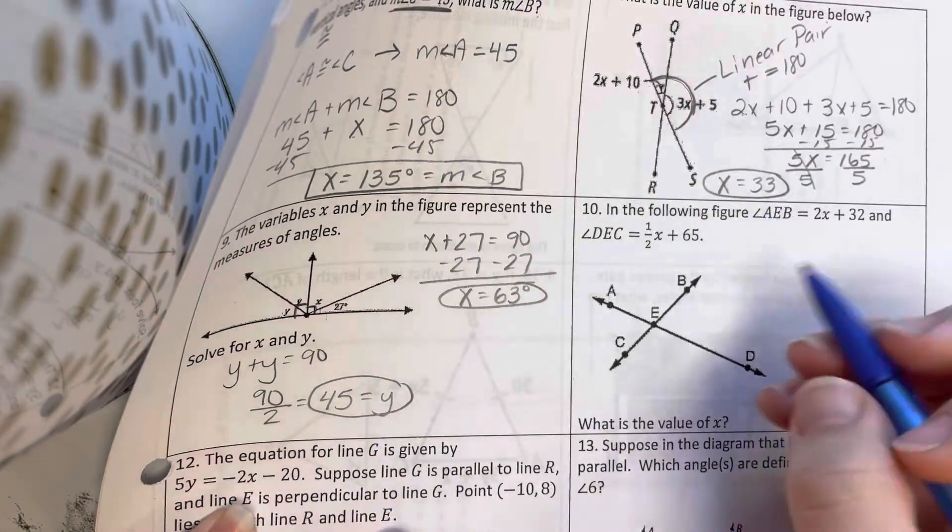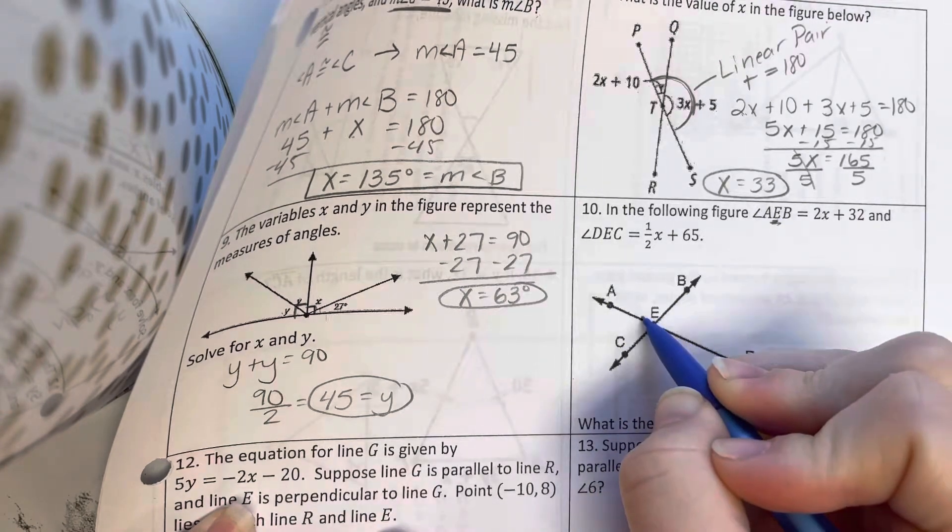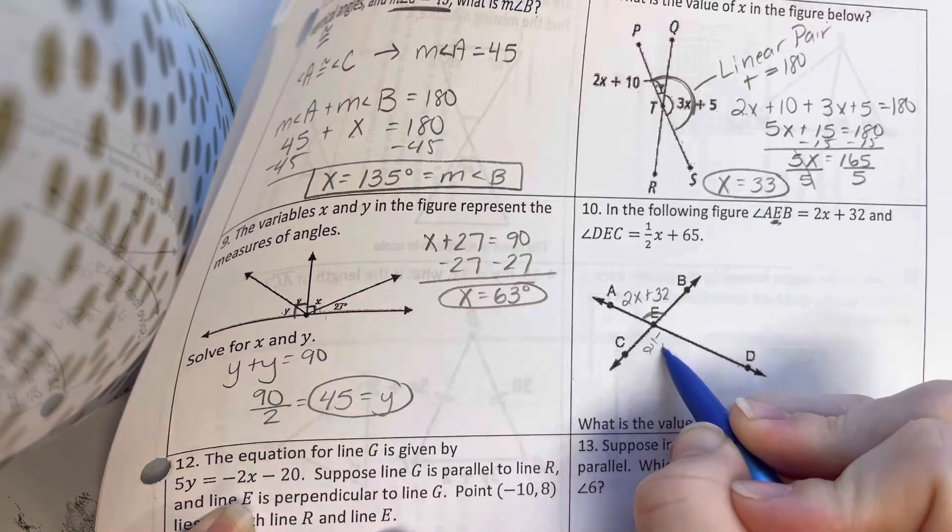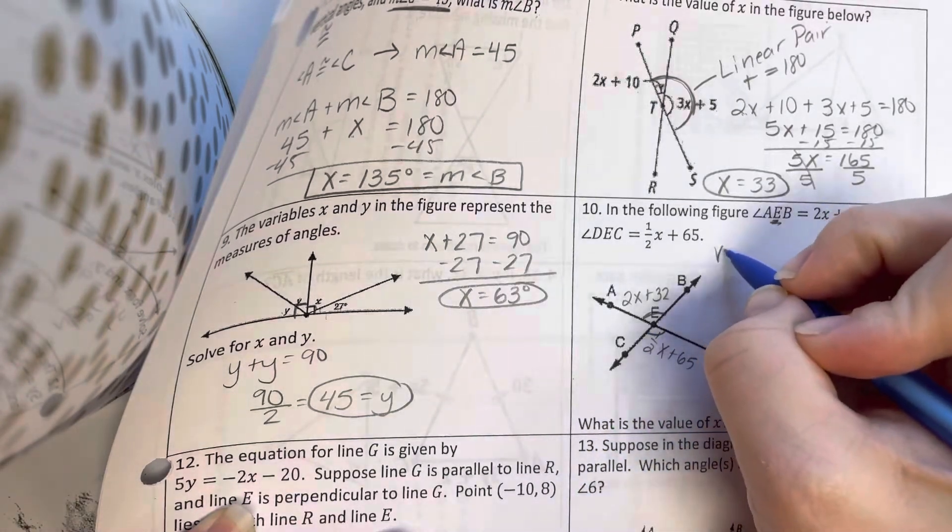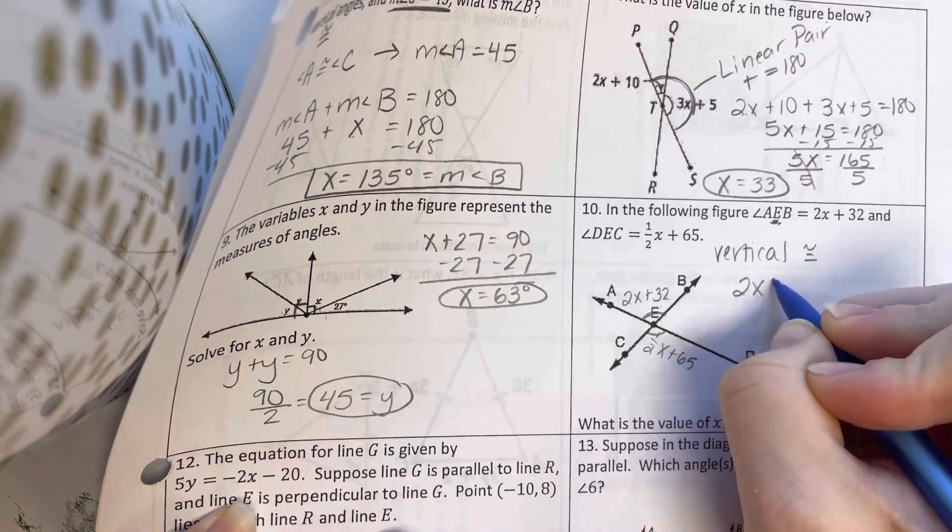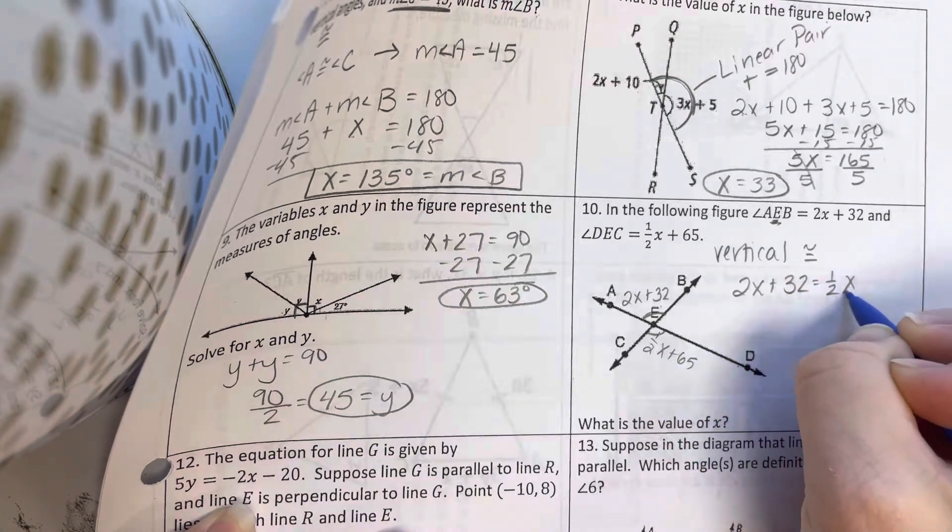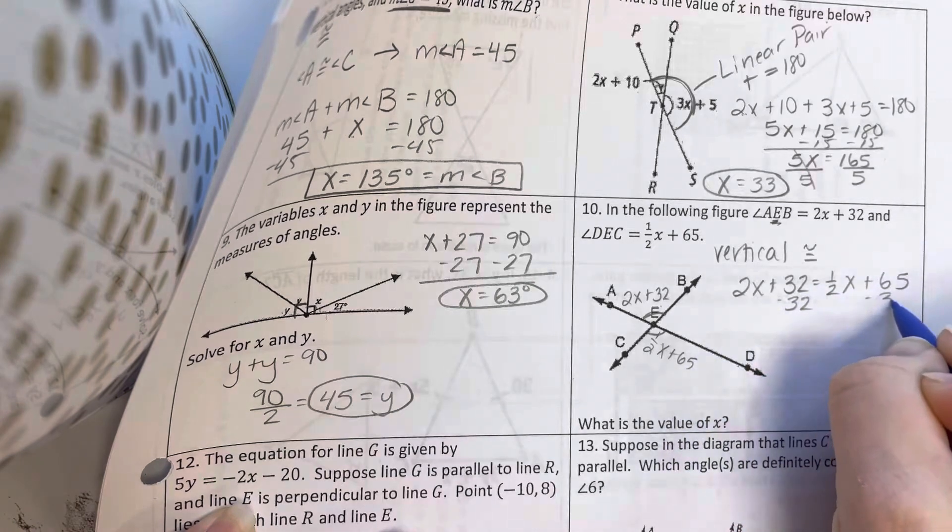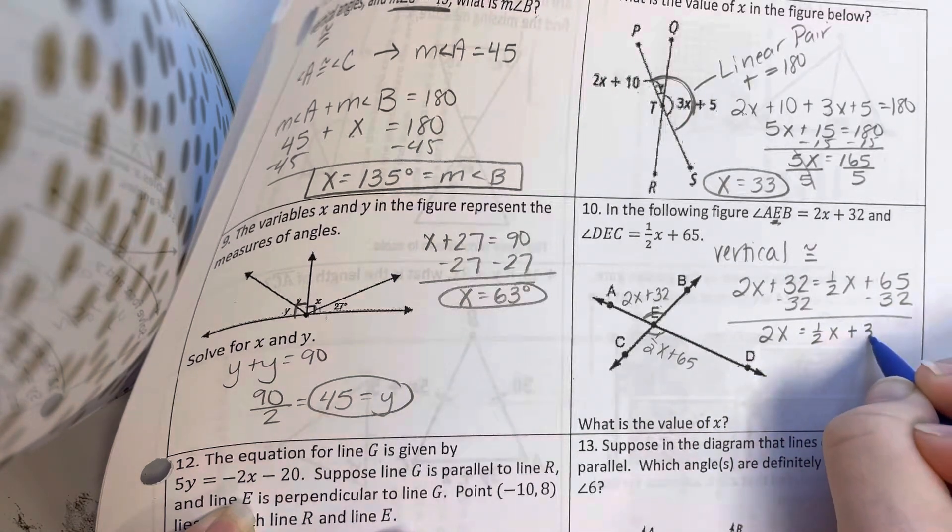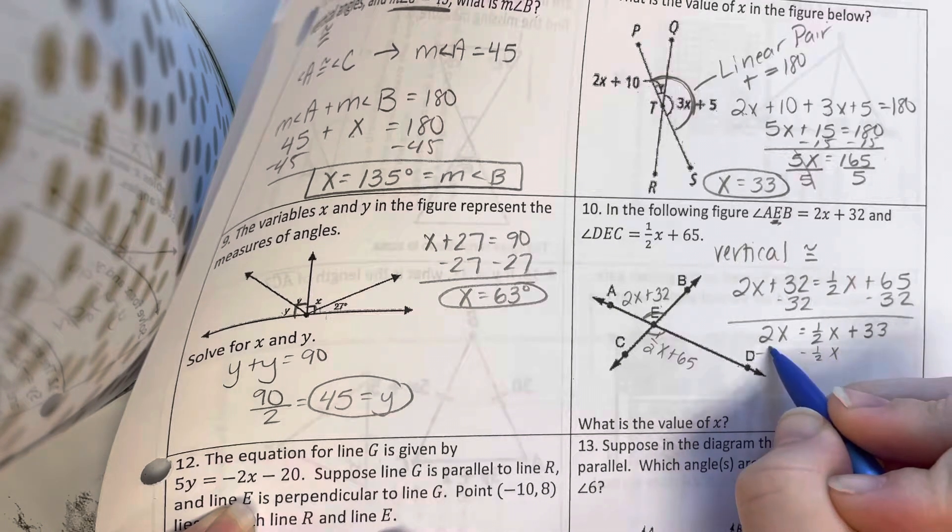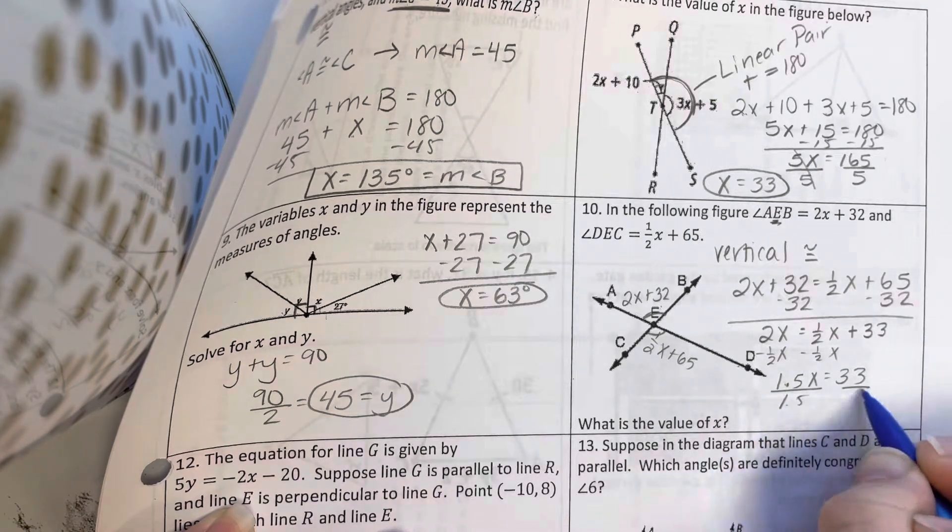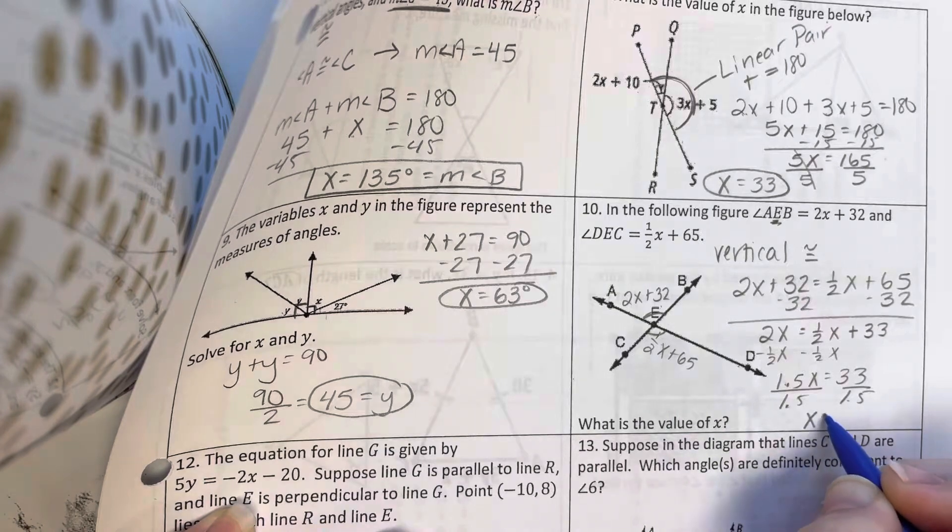All right, AEB, remember the letter in the middle is where the mark would be, is 2X plus 32. DEC is 1 half X plus 65. These are vertical angles, which means they are congruent. So I'm going to set them equal. So I'm going to subtract 32. 2X equals 1 half X plus 33. I'm going to subtract that 1 half X. That's going to give me 1 and a half X equals 33. Divide by 1 and a half. X equals 22.